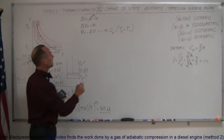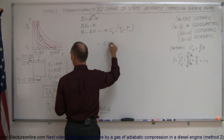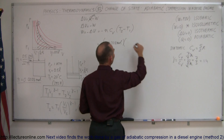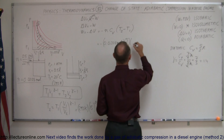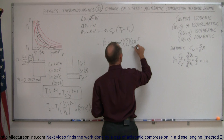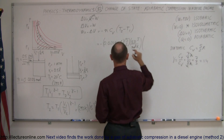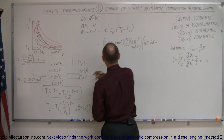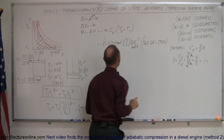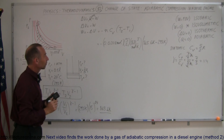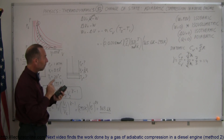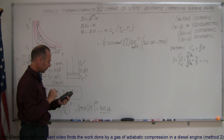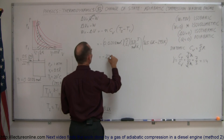Now we're ready to plug in and get the work done. W equals negative N times Cv times delta T, so: negative 0.0208 moles, times (5/2) times 8.31 joules per mole per Kelvin, times (865.6 minus 293) Kelvin. Computing this: 572.6 times 8.31 times 2.5 times 0.0208 gives us negative 247 joules.